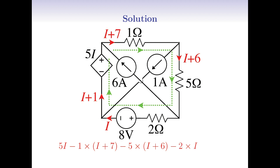Now, we are passing through a voltage source of 8 volts. Since we are entering the positive end and leaving the negative end, we feel a voltage drop. So we get minus 8 in the KVL. We ended the loop and we are at the same initial point, so there's no voltage difference between the initial and end points. The equation is going to be equal to 0.